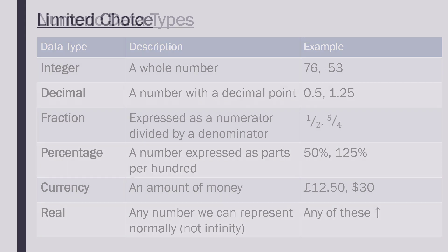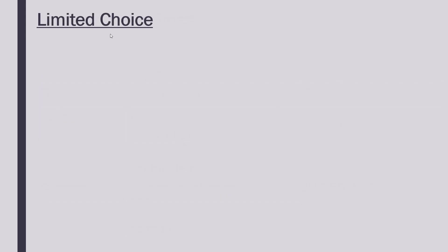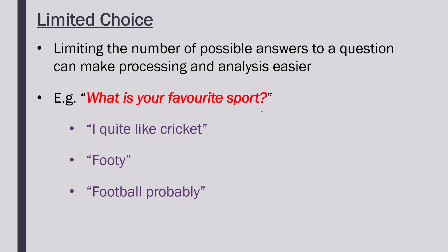Finally, we have another data type which we can express as a limited choice. This is relevant when we look at questionnaires. This is where we're limiting the number of possible answers to a question, and this is really good because it can make our processing and our analysis a lot easier. If I'm asking a question in a questionnaire like 'what is your favorite sport,' I could get loads of really broad answers which might be useful to me, but I'd have to sift through every single answer to extract the key bit. I'd have to read every single answer if it had an open-ended unlimited choice question.